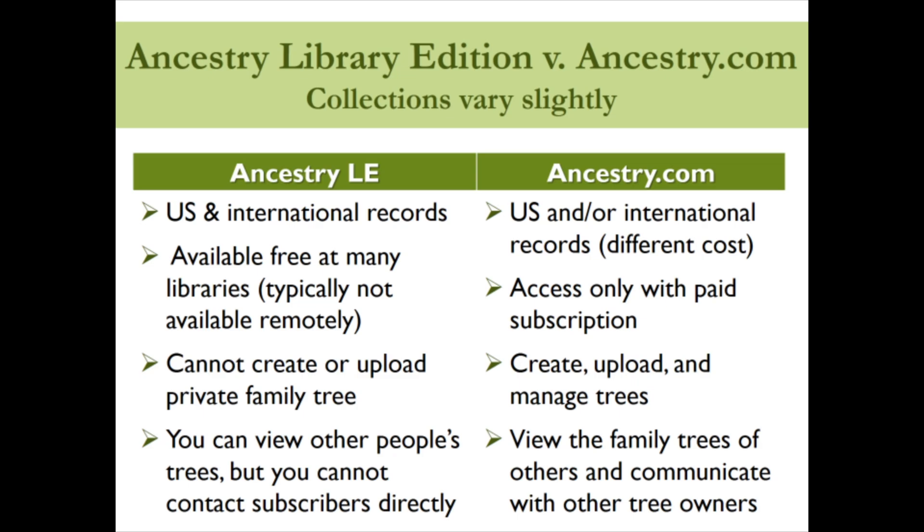Remember that to access Ancestry Library Edition, you will have to start with your library's website, not the Ancestry.com page. Ancestry.com is a paid subscription database designed for individual and personal use — users can upload and maintain family trees and collaborate with other subscribers. Ancestry.com also has other features such as Ancestry Academy, a large collection of tutorial videos, and tabs connecting you to Ancestry DNA and Ancestry Health. The Passenger and Immigration List Index, known as the Philbees, is also available through Ancestry.com but not on the Ancestry Library Edition.